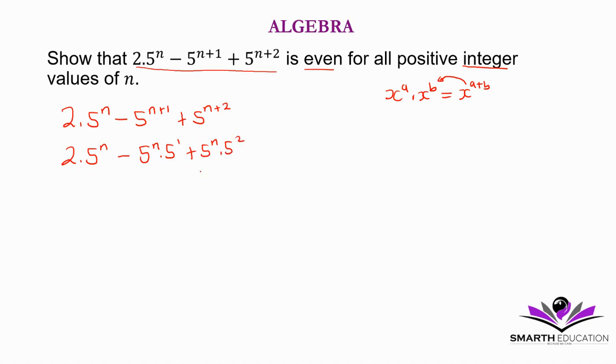And then we have a highest common factor here which is 5 to the power n. Let's factor it out. This divided by 5 to the power n, this divided by 5 to the power n is 2 minus, this divided by 5 to the power n is 5.